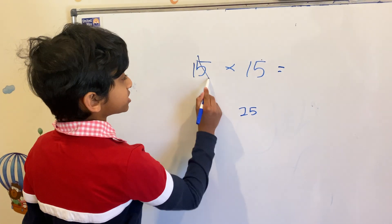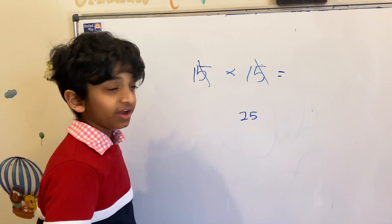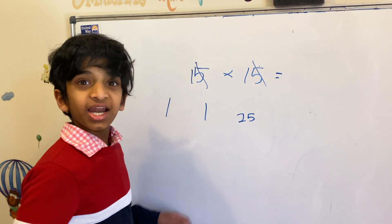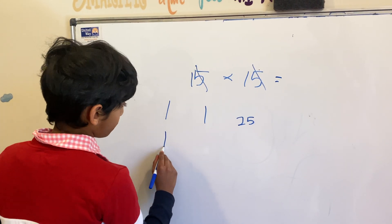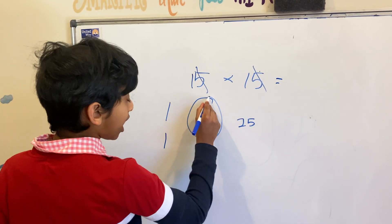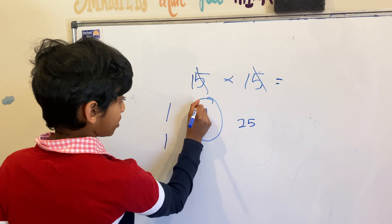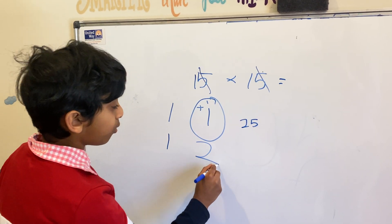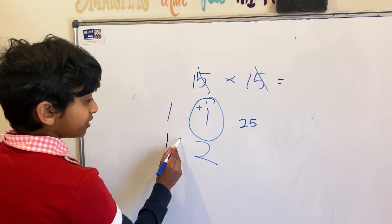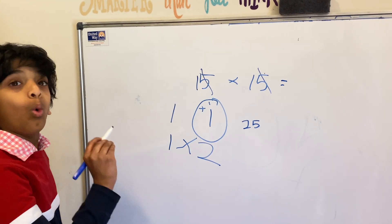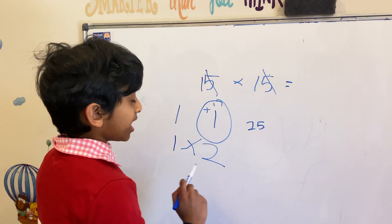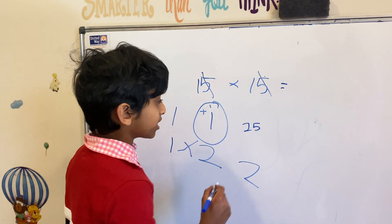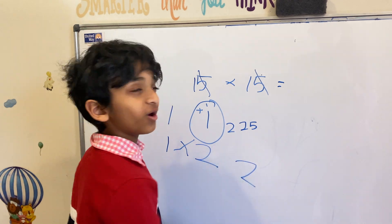Next we can just take these off since we just did 5 times 5, and we remain one here and one here. The next thing is you have to take one of the ones and increase the other one by plus one. Look, 1 plus 1 which is 2. 1 times 2 is 2. So the correct answer is 225. See, it's so easy.